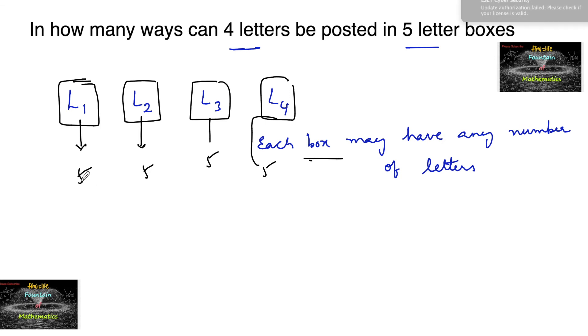So the number of ways these four letters can be posted in five letter boxes is the required number of ways, which is equal to, by multiplication principle, 5 × 5 × 5 × 5, that is 5^4 or 625.